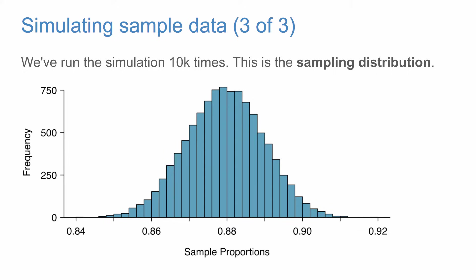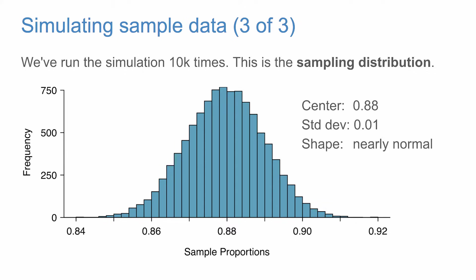This distribution is called the sampling distribution, because it's the distribution of sample point estimates. The mean of this distribution is 0.88 — exactly what our actual population proportion was. The standard deviation is 0.01. The shape has a bell curve and is symmetric. It very much resembles the normal distribution, and this is no accident — it is a result of what is called the central limit theorem.